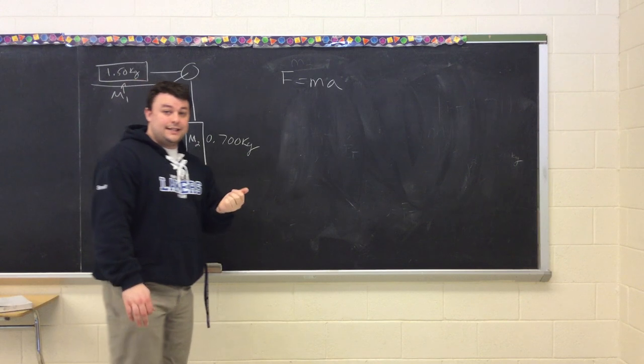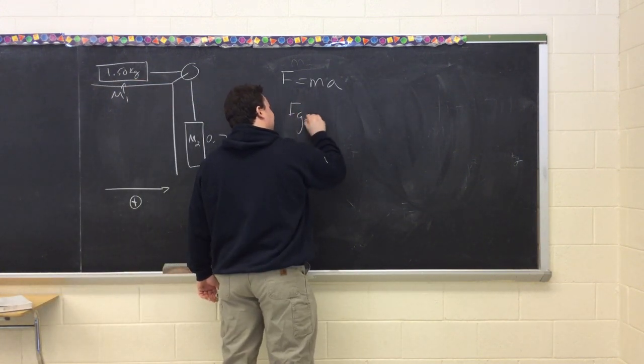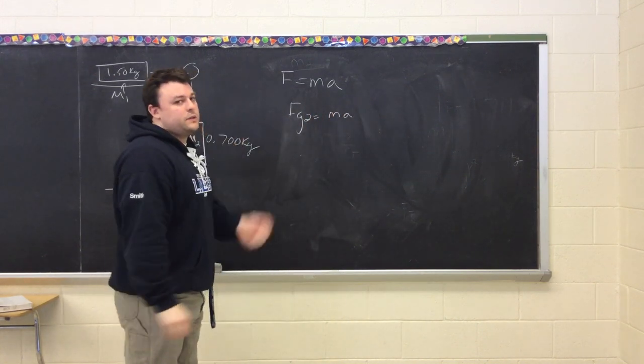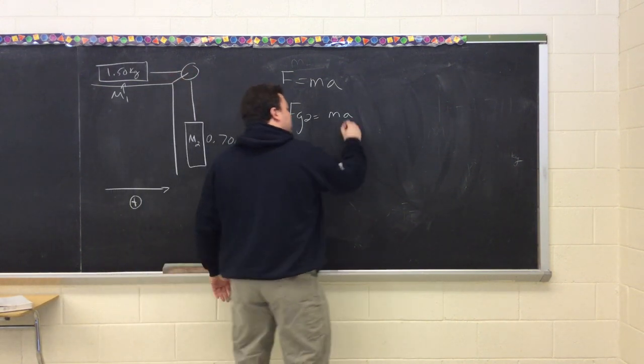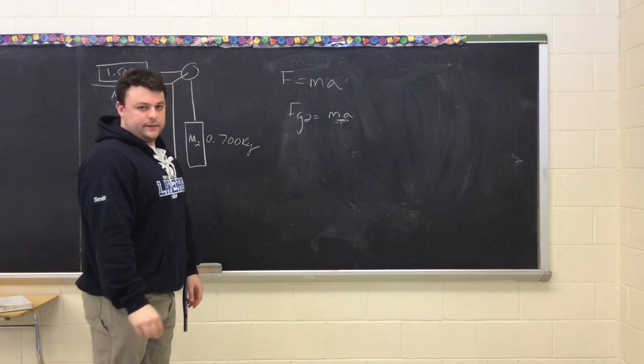However, in this case, it's just Fg2. So Fg2 equals M times A and is solely responsible for the acceleration of this system. It's important to note that we should also say mass total for this system.